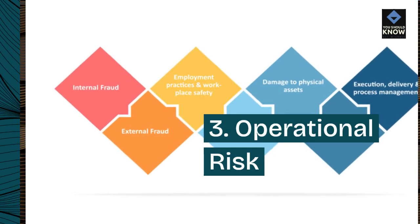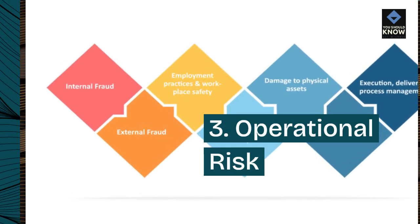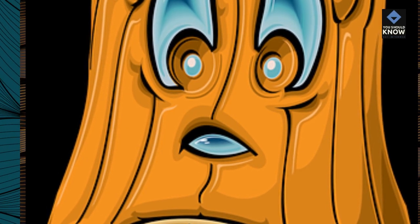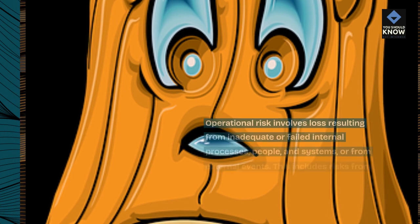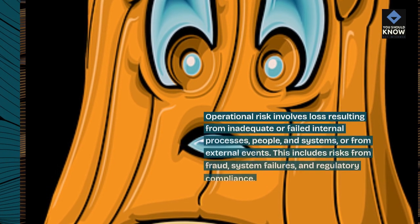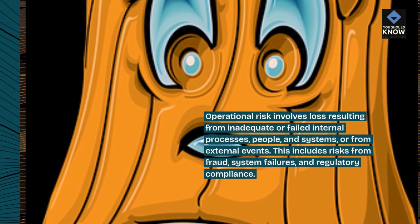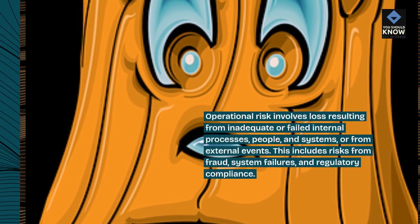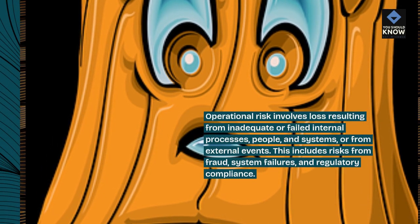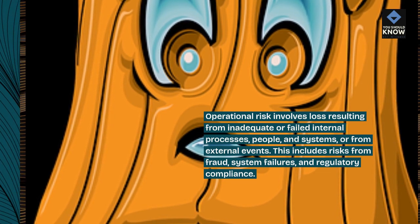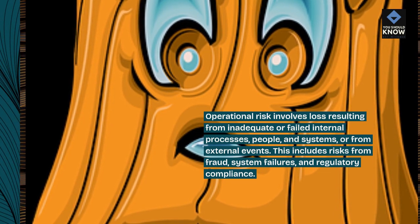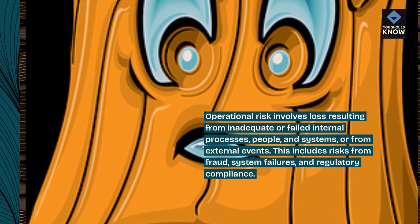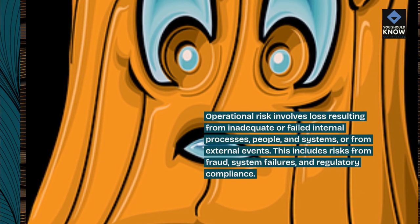3. Operational Risk. Operational risk involves loss resulting from inadequate or failed internal processes, people, and systems, or from external events. This includes risks from fraud, system failures, and regulatory compliance.